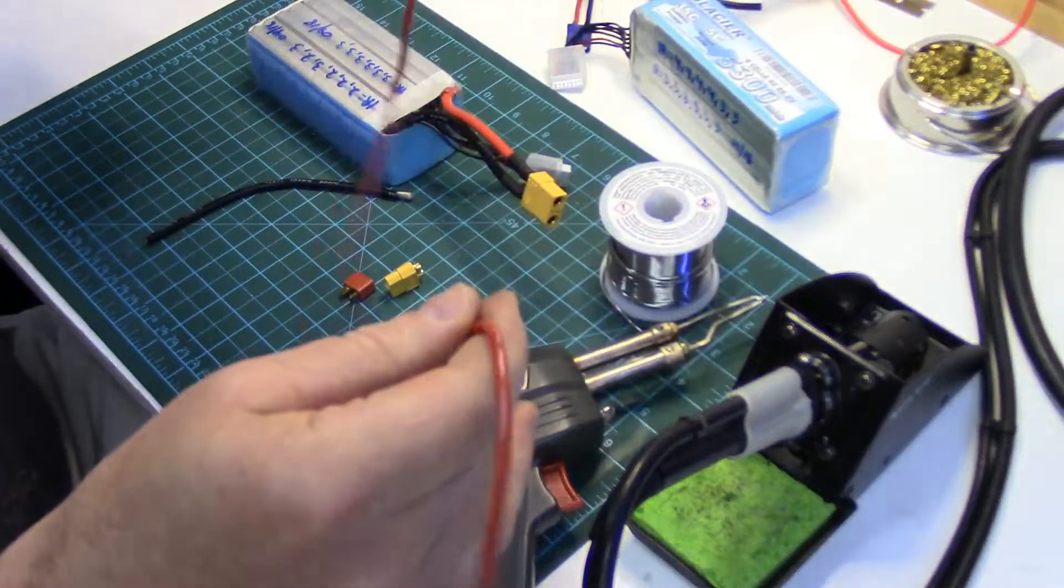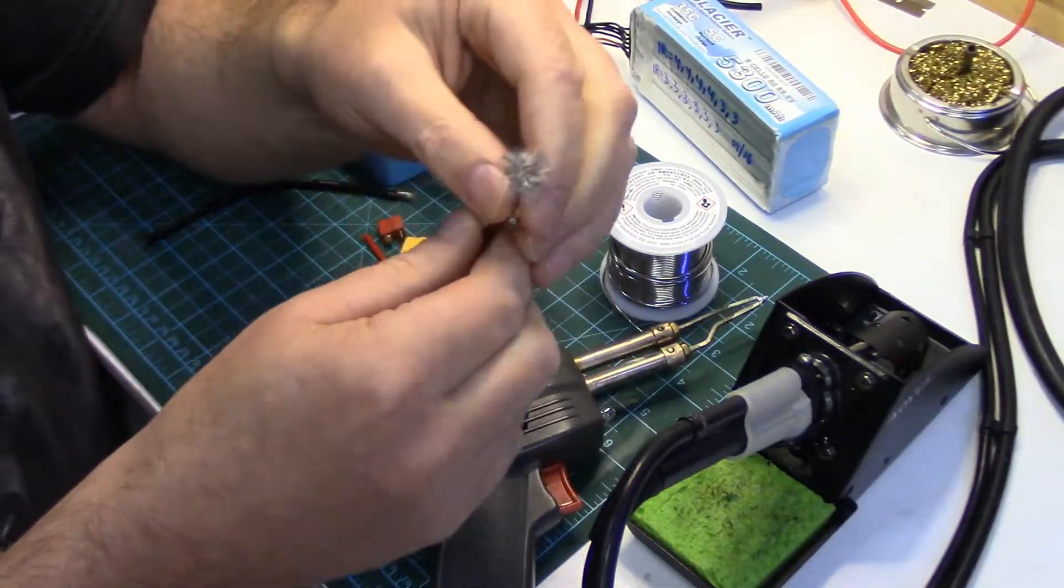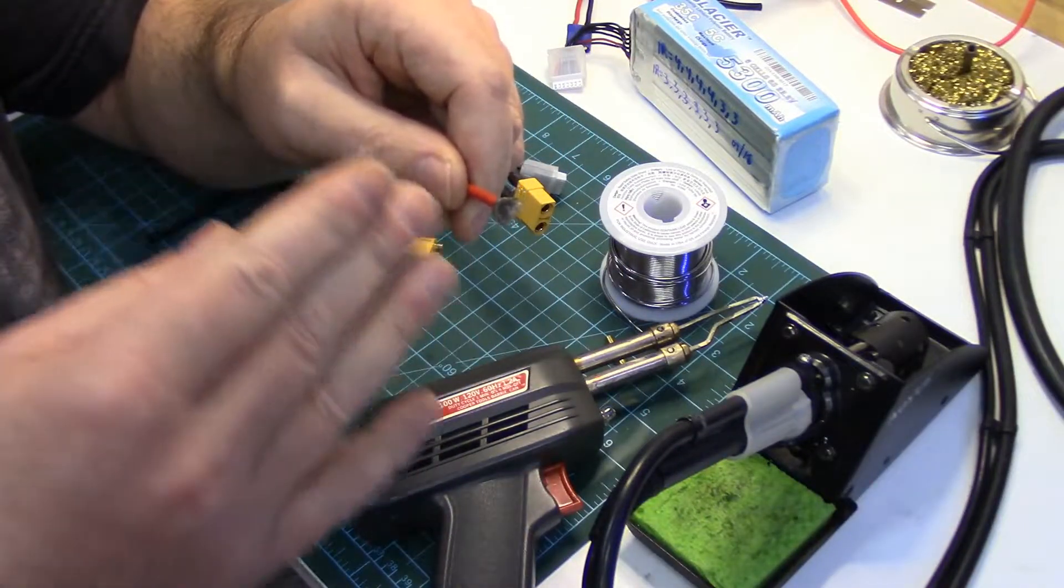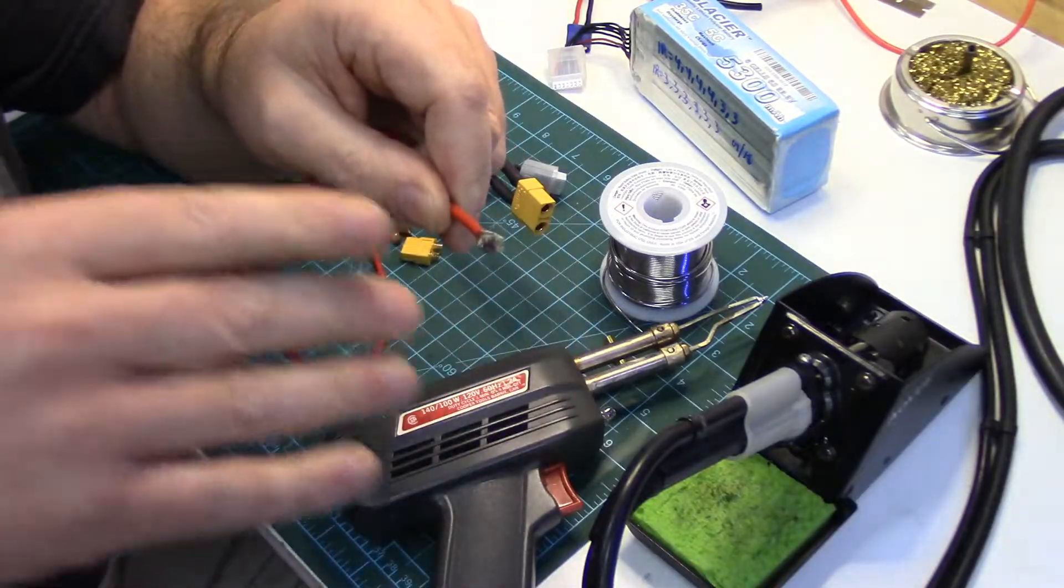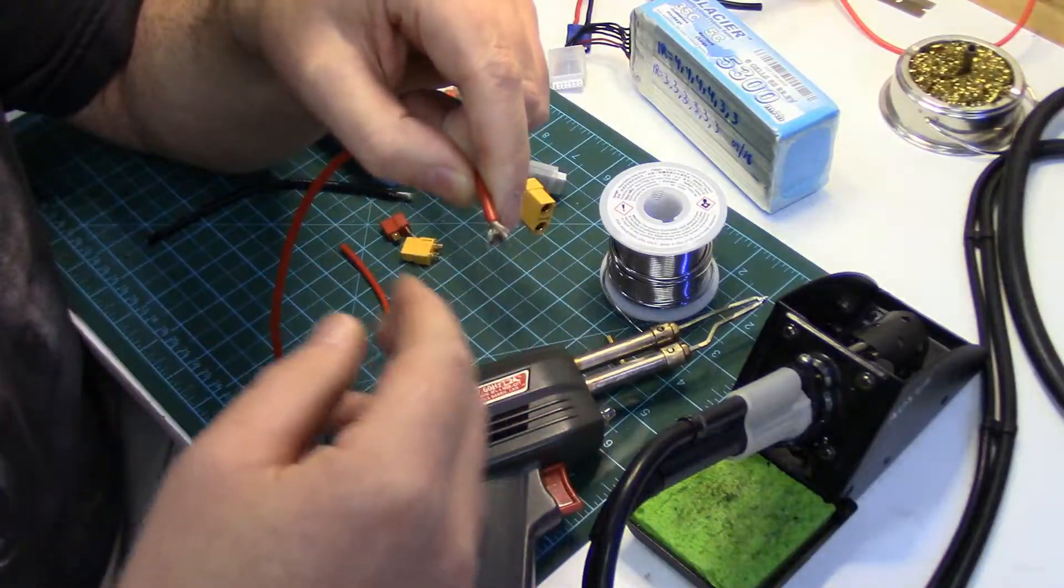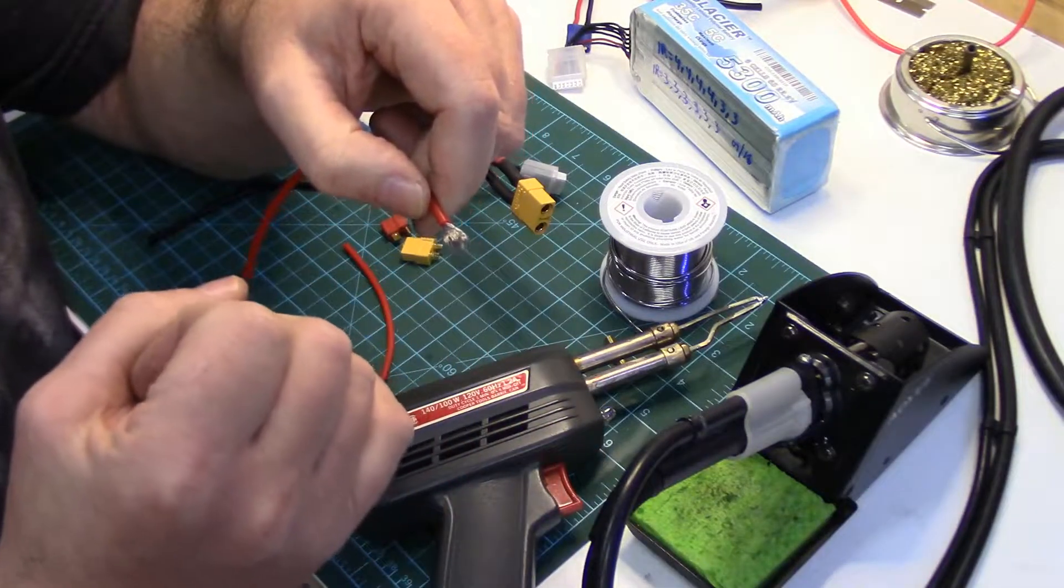What makes that a little bit of a challenge working with this stuff is tinning it is a little bit harder because it takes more heat and more solder to penetrate all those strands. And that's what you're doing when you're tinning. You're coating all those little strands of wire with solder so they're held together.